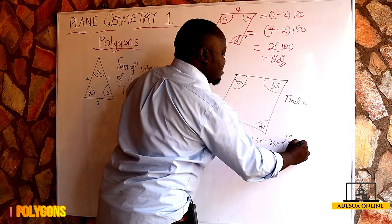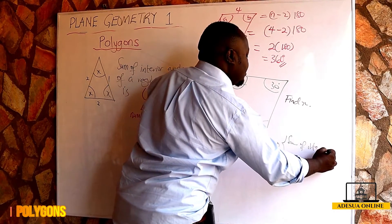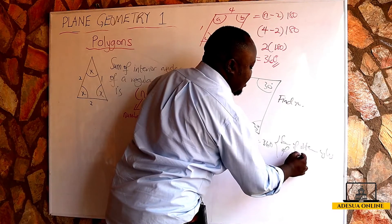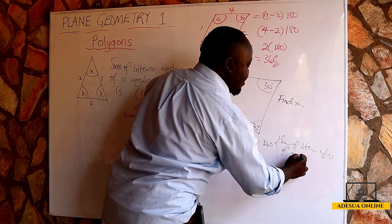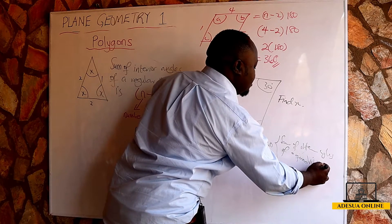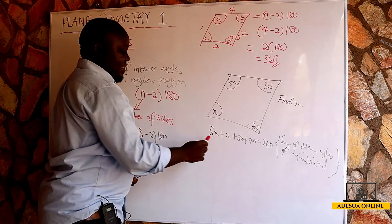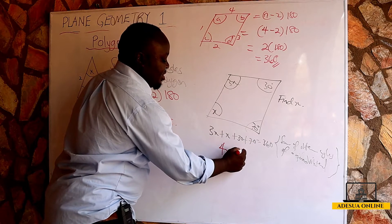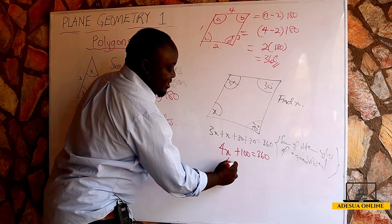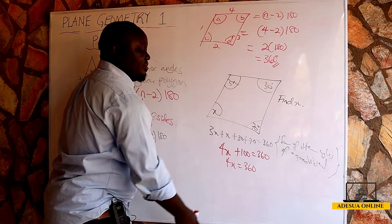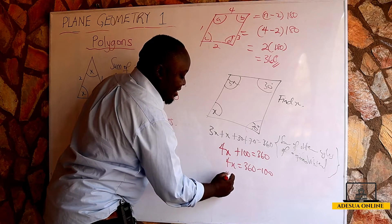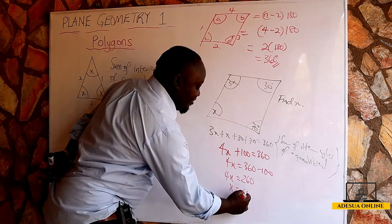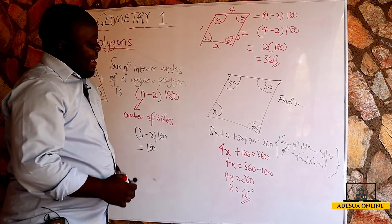So I'm going to write: 3x plus x plus 30 plus 70 equals 360. The sum of interior angles of a quadrilateral. This gives me 4x plus 100 equals 360. So 4x equals 360 minus 100, which is 260.